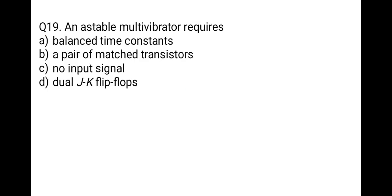The next question: an astable multivibrator requires which of the following? Options: balanced time constant, a pair of matched transistors, no input signal, or dual JK flip-flops. An astable multivibrator is also called a free-running multivibrator. Its output is a square wave and it does not require any input signal. Correct option is C, no input signal.